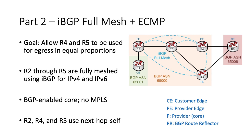We briefly explored the IBGP full mesh design in the previous video. ECMP has two key advantages: installation of multiple routes in the RIB and FIB, which improves availability, and load sharing, which allows a greater quantity of traffic to flow across the network. The IBGP design ensures that all four routers in AS65000 can exchange BGP-learned routes directly. While this design is both uncommon and scales poorly, it lets us focus on BGP egress routing and not on route propagation, which I discuss later.